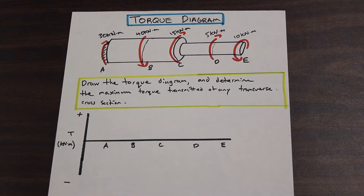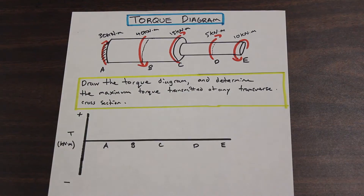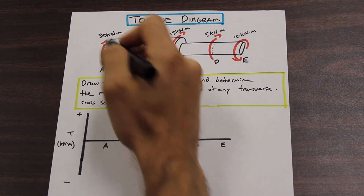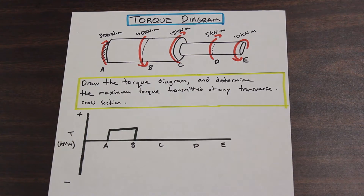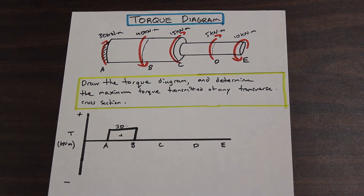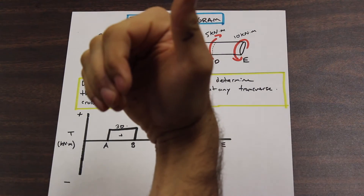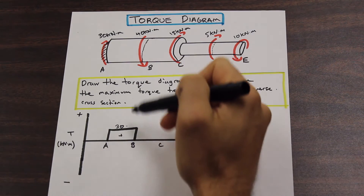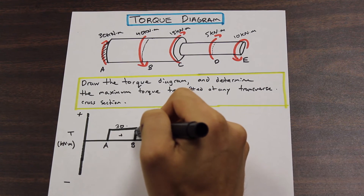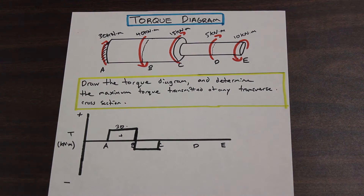So we have a 30 kilonewton meter force in the positive direction between A and B. We're going down the shaft from A to B, so the torque from A to B is 30 kilonewton meters. When we get to point B, we have a 40 kilonewton meter torque but that's in the opposite direction — counterclockwise, thumb pointed away from the rigid support. So at point B we subtract 40 from 30: 30 plus negative 40 gives us negative 10 kilonewton meters.